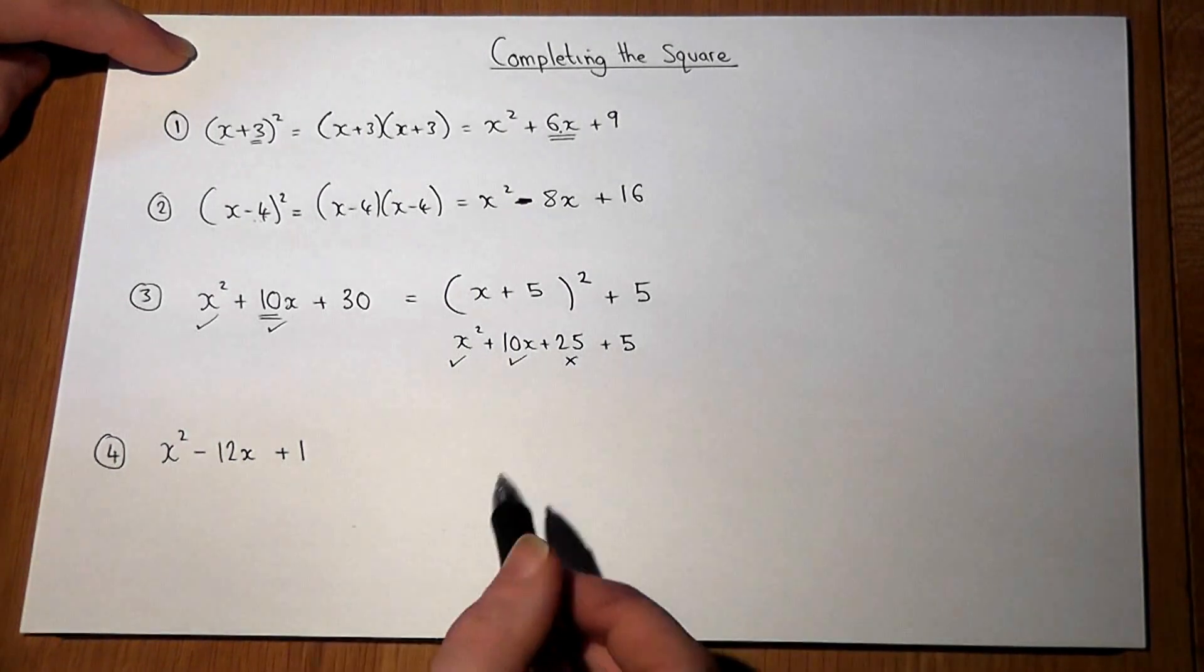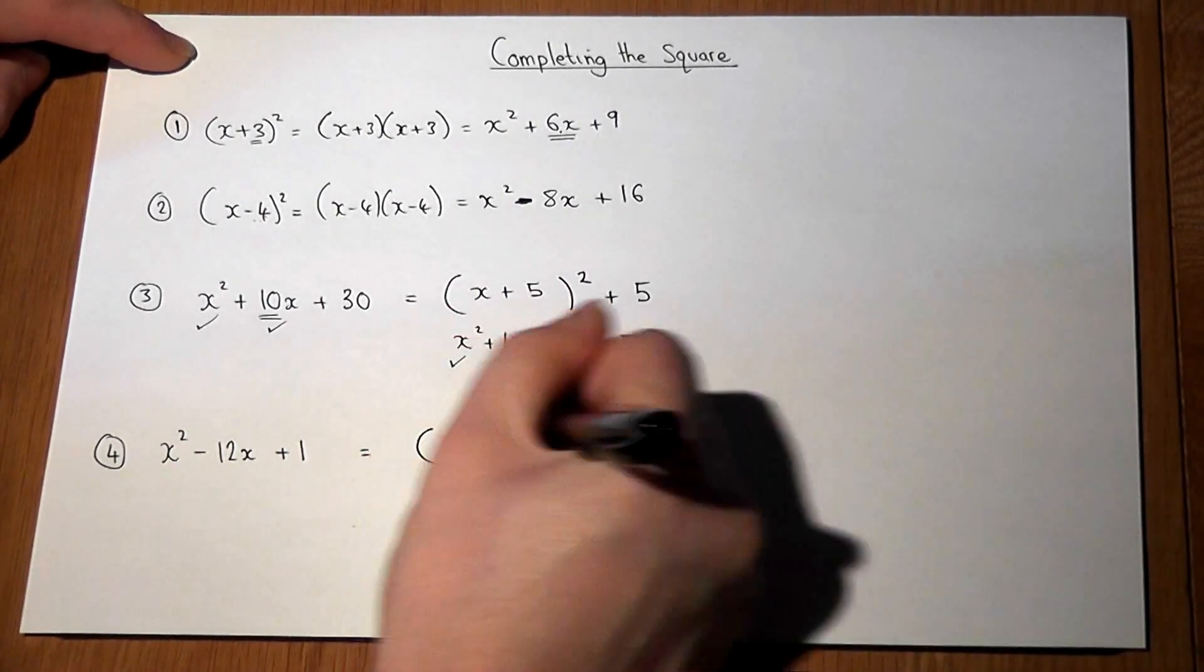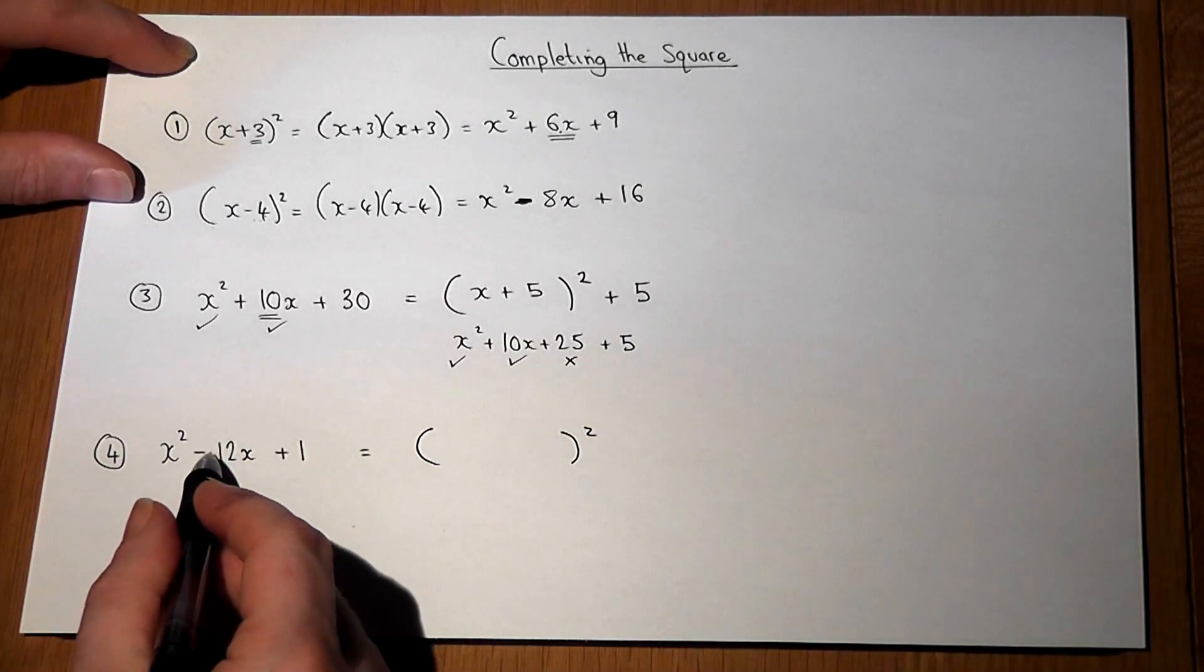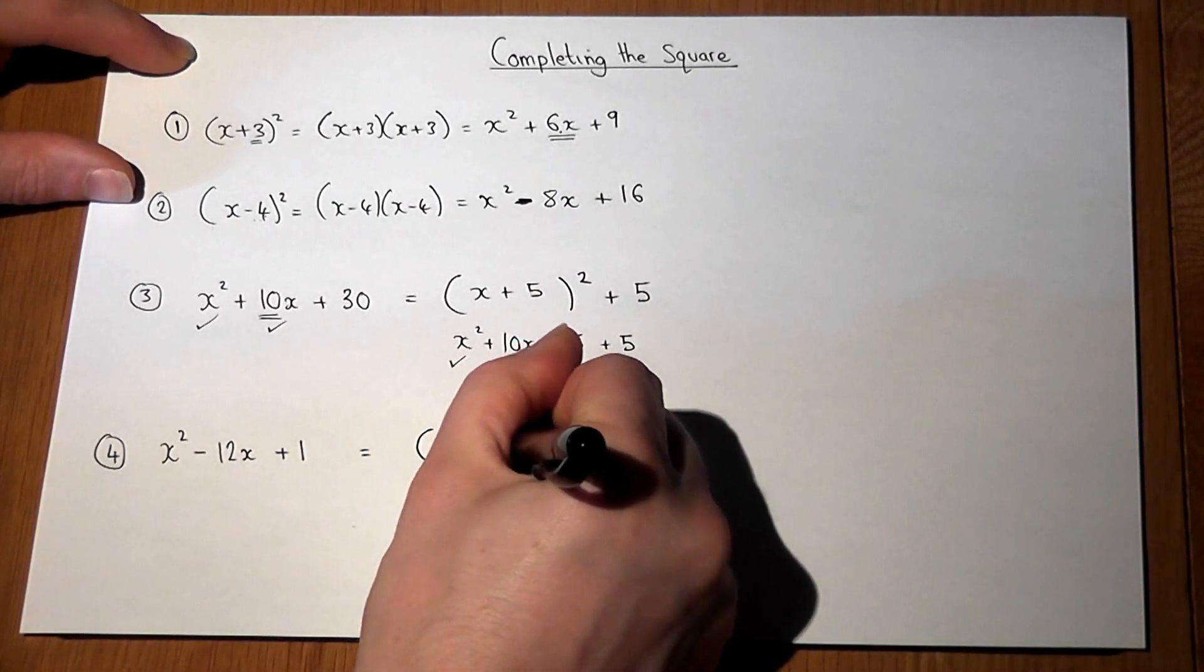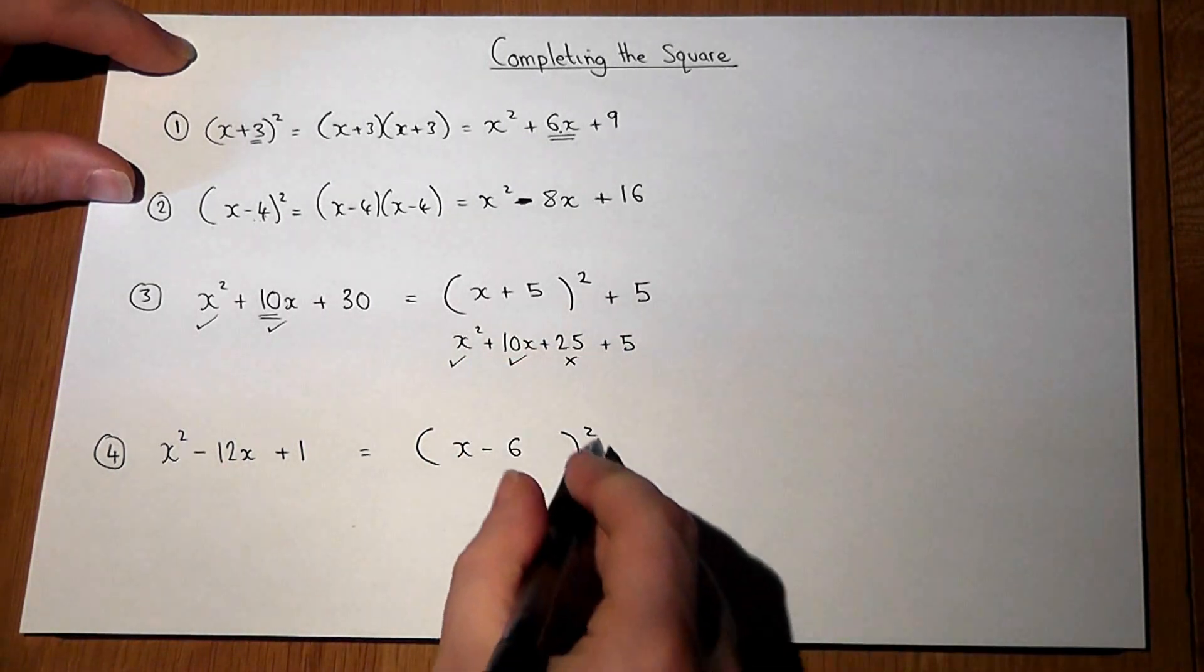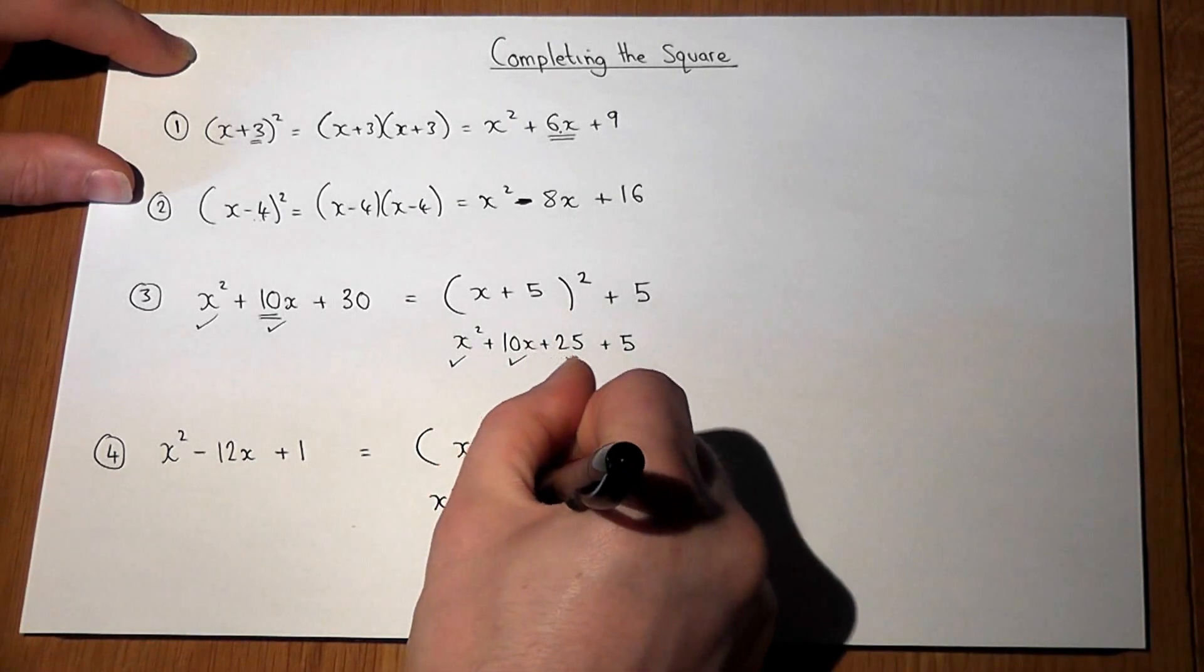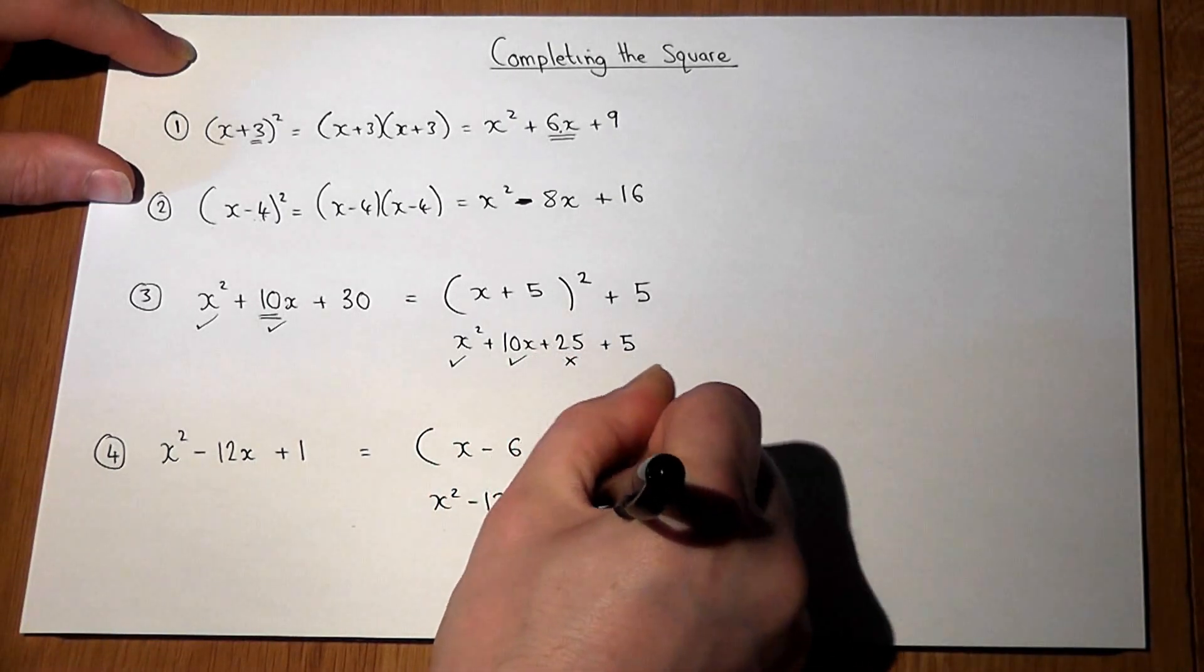So on the fourth one, in a similar way, I want to write it as something squared where possible. So I halve the -12 and get (x - 6)². But this square has to give x² - 12x + 36.